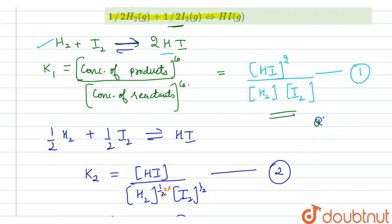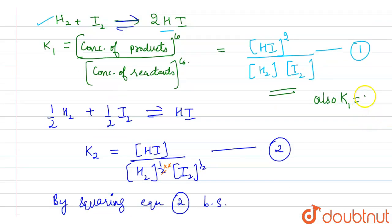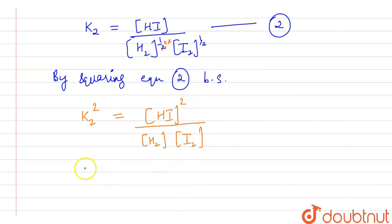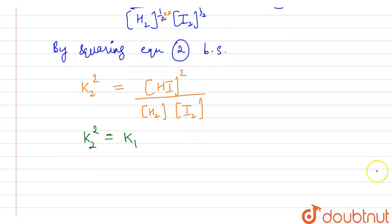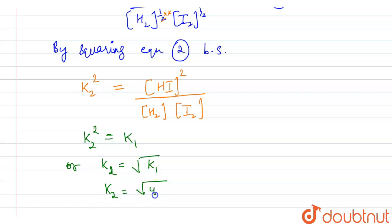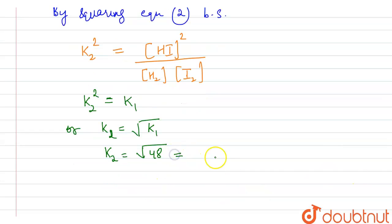The value of K₁ is given as 48 at 720 Kelvin. Putting it in: K₂² = K₁ = 48, so K₂ = √48 = 4√3. The value of the equilibrium constant for the second reaction is 4√3.